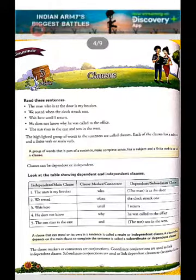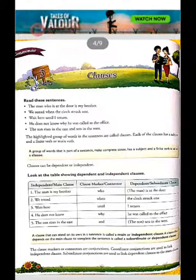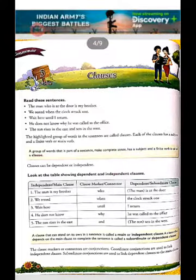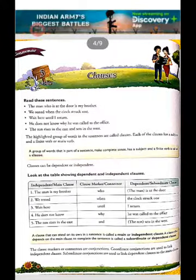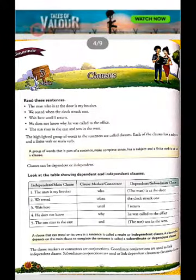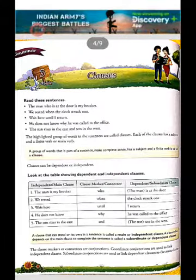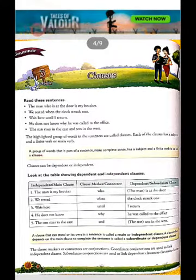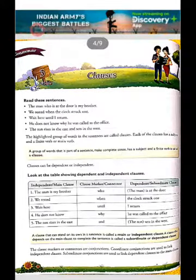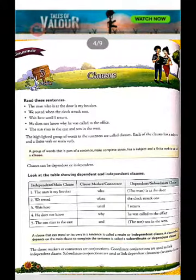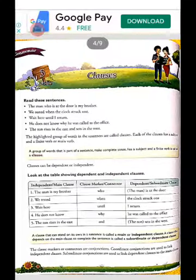Look at the table showing dependent and independent clauses. Main clause: 'The man is my brother.' Clause marker, connector, hook: 'who.' Subordinating clause: 'the man is at the door.' Further examples: 'We rested when the clock struck one.' 'Wait here until I return.' 'He does not know why he was called to the office.' 'The sun rises in the east and the sun sets in the west.'